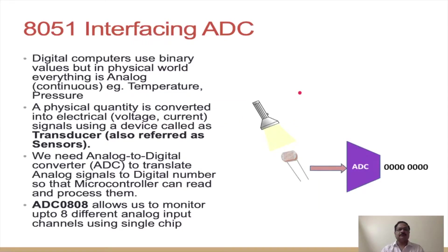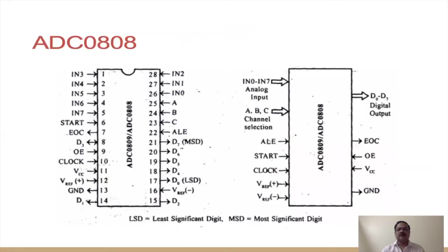Let us focus on the A-to-D converter. The ADC we are going to discuss is the ADC 0808, which is an 8-bit A-to-D converter. It has a total of eight channels, meaning eight different parameters can be monitored using this single A-to-D converter. The analog input goes into the converter and we get a digital output. Let us understand the various signals available on this 28-pin chip.